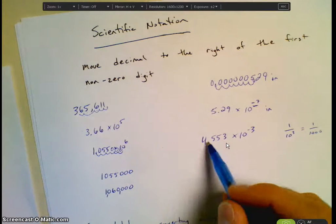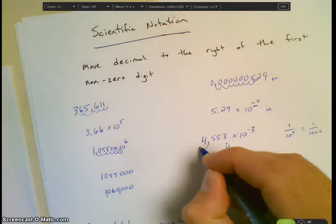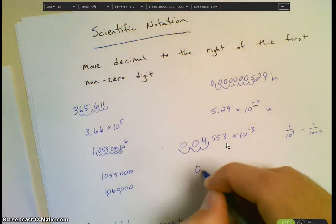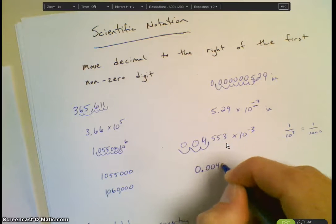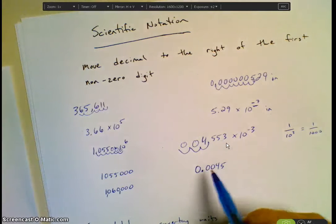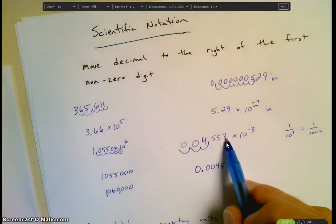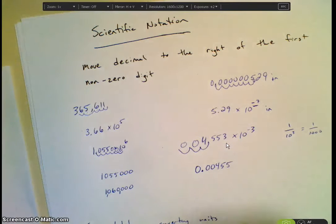So we're going to move the decimal point this direction. 1, 2, 3. So I have 0.0045. Again, three digits. These zeros are placeholders. 4, 5, my next number is a 5, followed by a 3. So it remains a 5. Questions on that? Pretty straightforward? All right. Let's look at factor label now.